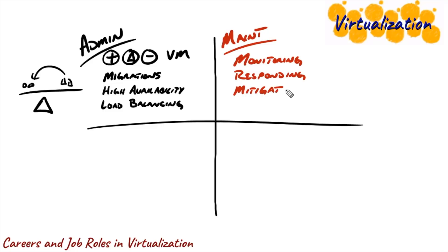The number one way that we mitigate problems in the world of IT, and especially in virtualization, is the power of a good backup. Ensuring that we have copies of our files that are stored someplace else so that if we needed to, we could rebuild our server, we could rebuild our virtual machines. We have the backups in place to ensure that if something goes wrong, we can put things back the way they were.